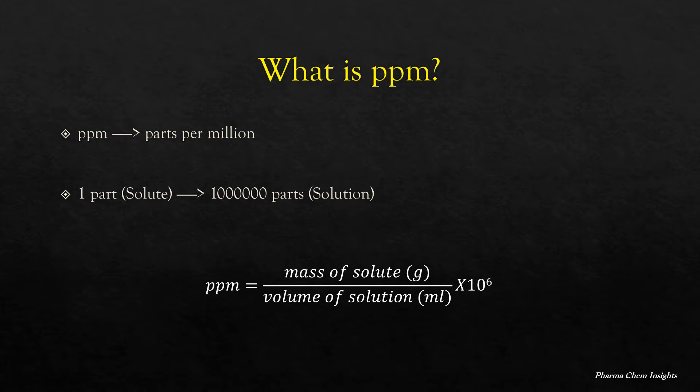Formula for PPM: PPM is equal to mass of solute in grams divided by volume of solution in ml, into 10 to the power 6.